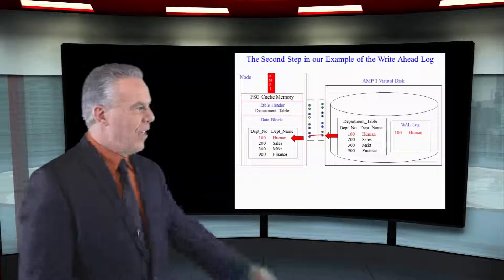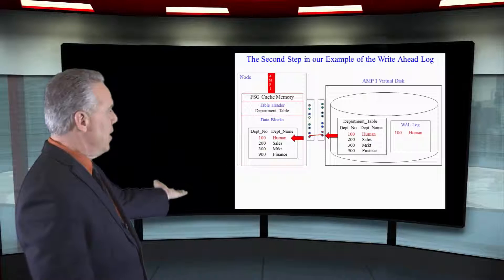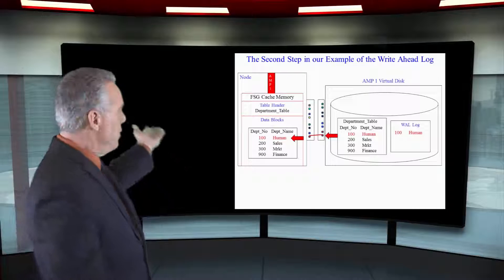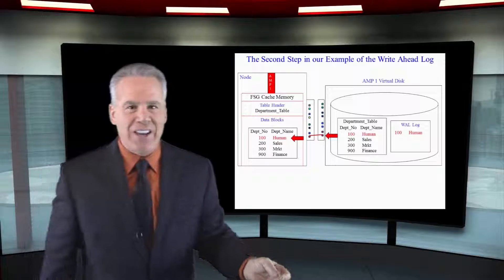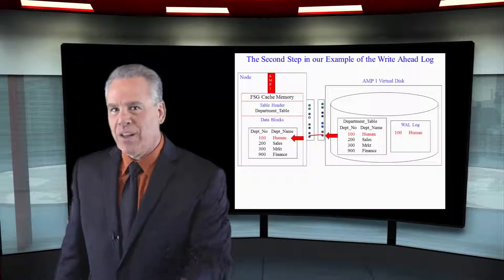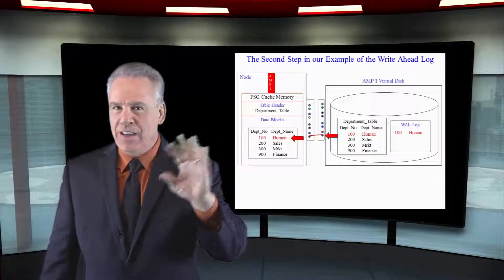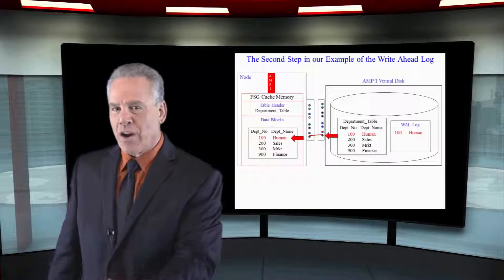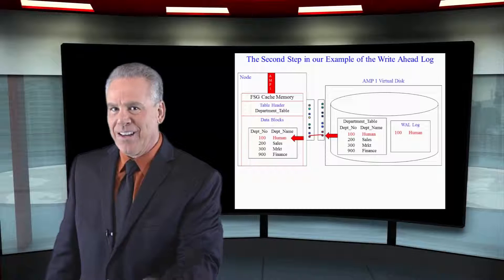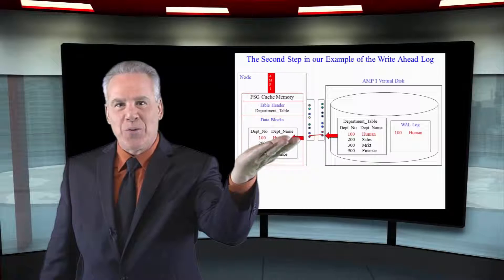Here you can see that we've still got on our disk the old block. We've moved it into FSG cache and we've already captured the row that's about to change and its before image. If anything now happens we've got our undo log down there to make the change go back to the way it was.